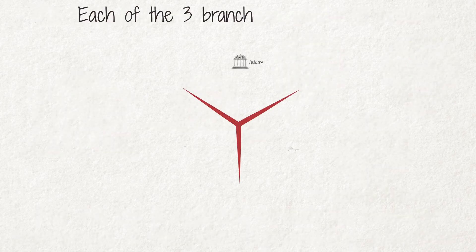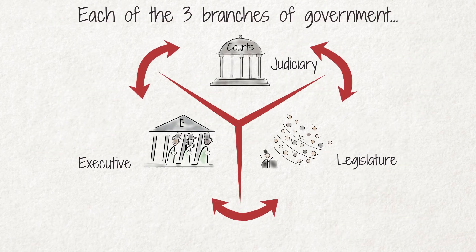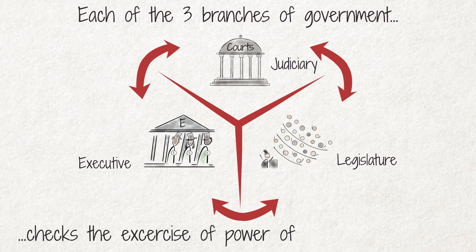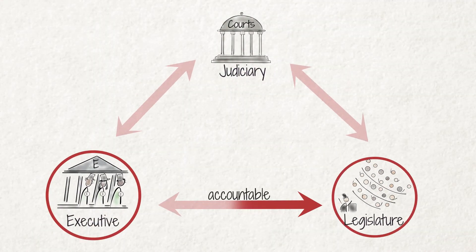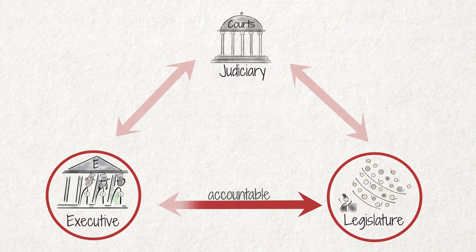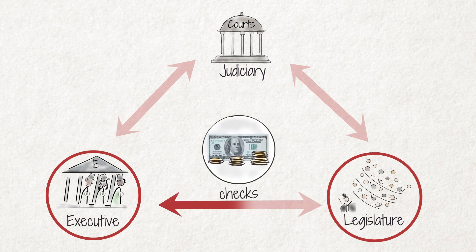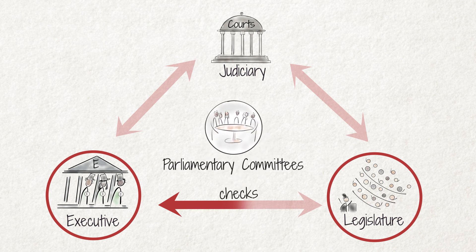Each of the three branches of government — the legislature, the executive, and the judiciary — checks the exercise of power of the other branches. The national executive is accountable to parliament. Parliament oversees the exercise of power and the work of the executive and checks that departments spend their money wisely. Ministers regularly appear before parliamentary committees to explain their work to members of parliament and to justify their department's decisions and spending.